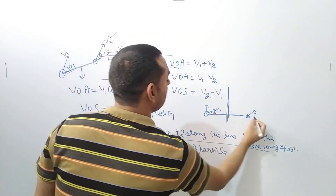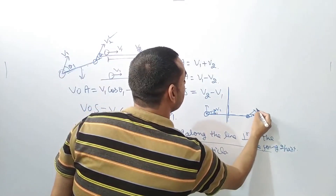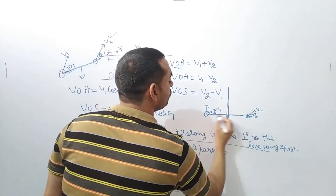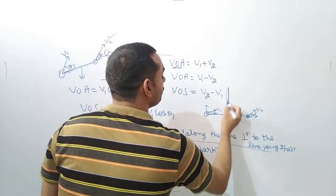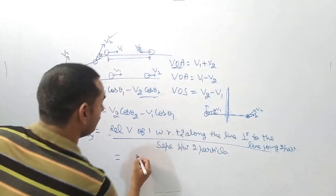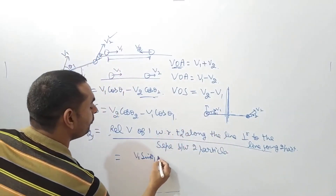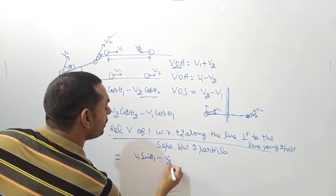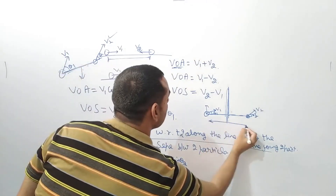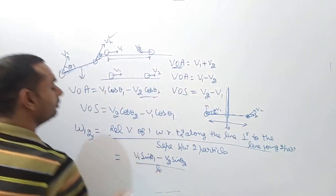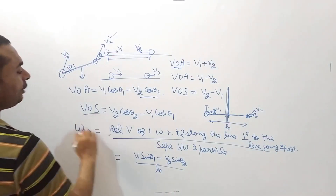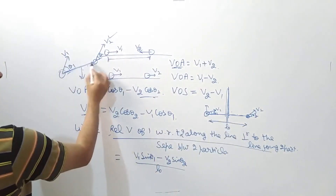This is theta 1, this is v1, this is theta 2 and this is v2. So along the line which is perpendicular to the line joining the two, the relative velocity of 1 with respect to 2 — how much is it? It is v1 sin theta 1 minus v2 sin theta 2, and upon L0. So this is L0. So this is velocity of 1 with respect to 2. And velocity of separation is along the line joining. Approach and separation is along the line joining.